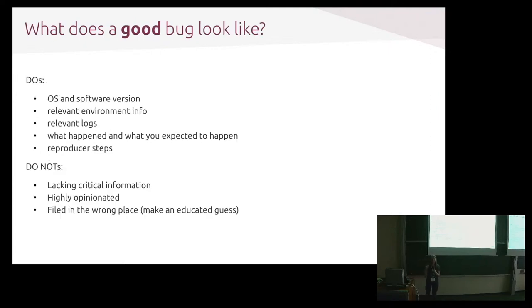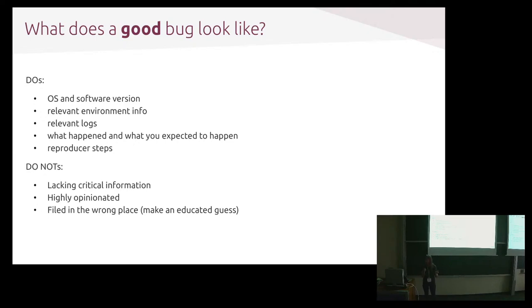So what does a good bug actually look like? There are some do's and don'ts. You want to include your operating system, the package software version, and any relevant environment information — if you're having a networking problem, maybe mention your firewall rules. Include any relevant logs, what happened and what you expected to happen. And of course, reproducer steps, because that's going to help the developer go and try to reproduce it. If they can reproduce it, they're more likely to fix it.